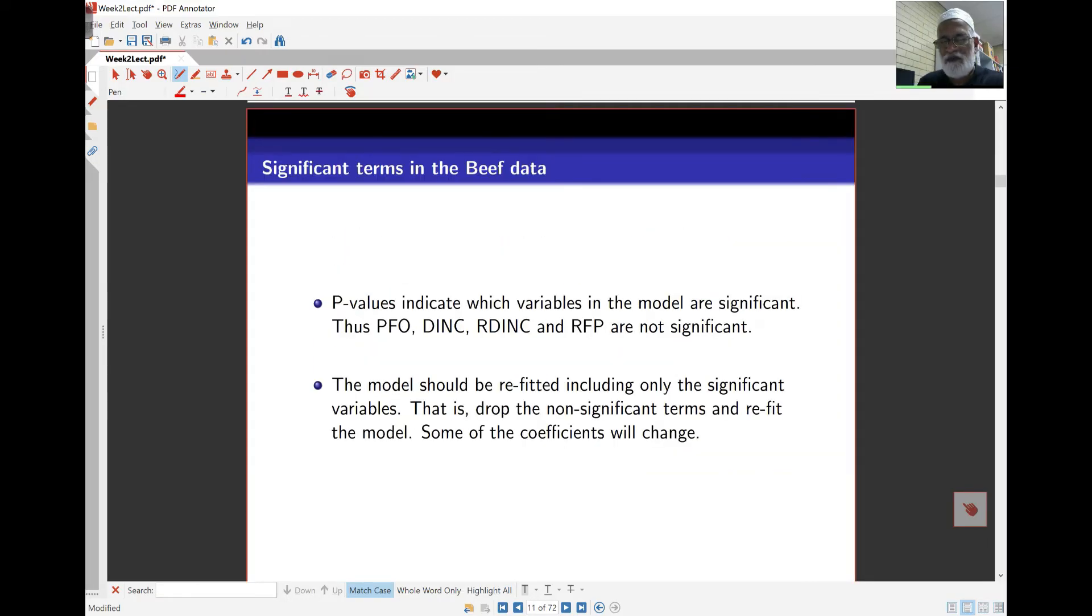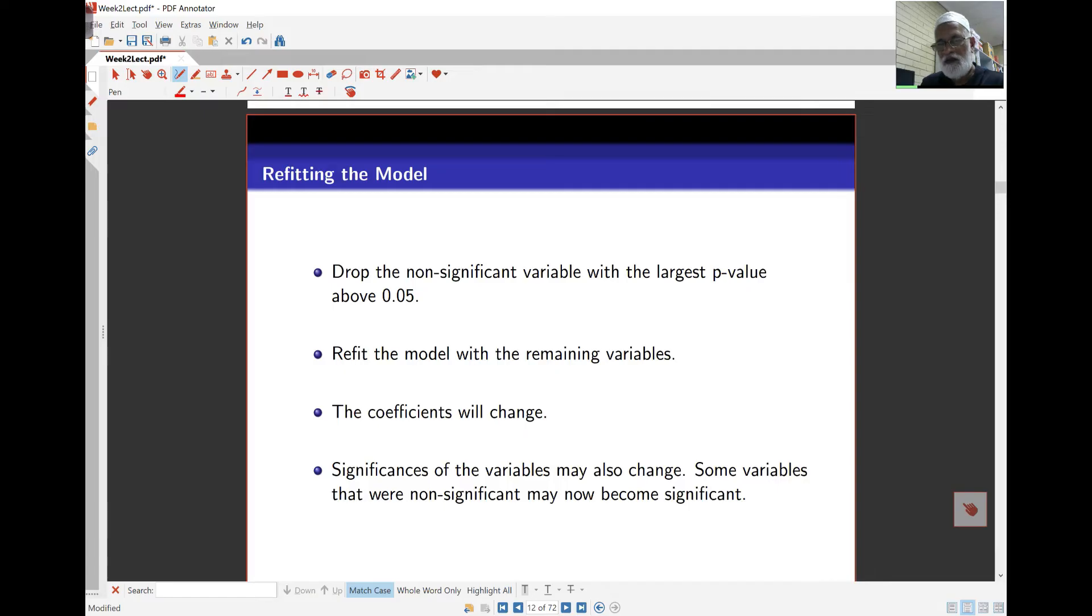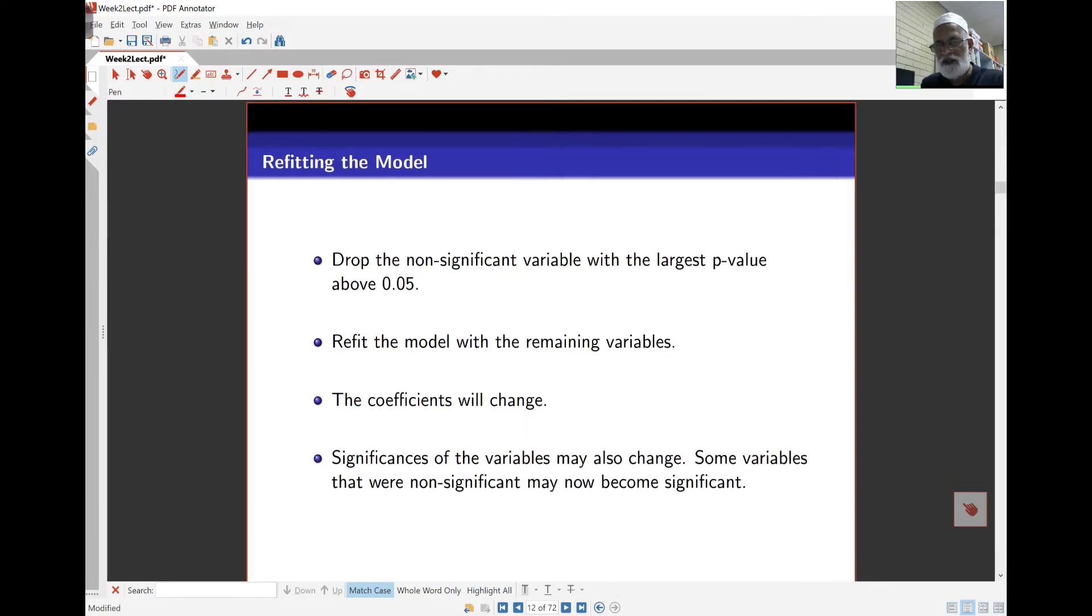So in this case, the p-values indicate that only the variables we saw earlier were significant, and these other four of them are not significant. So we should refit the model, omitting the non-significant variable with the largest p-value. And then we'll find some things will change, and we'll decide what to do from here. So this is a step-by-step process.